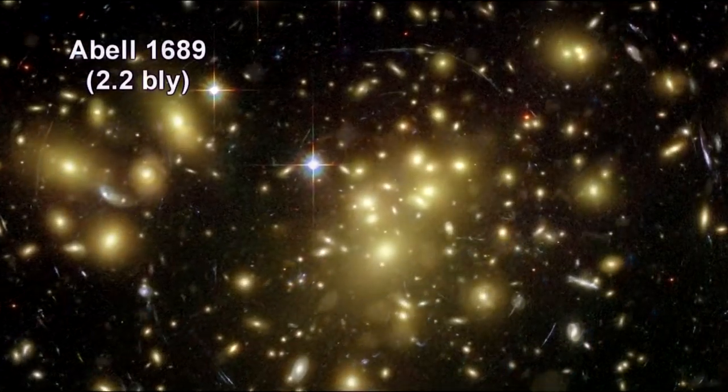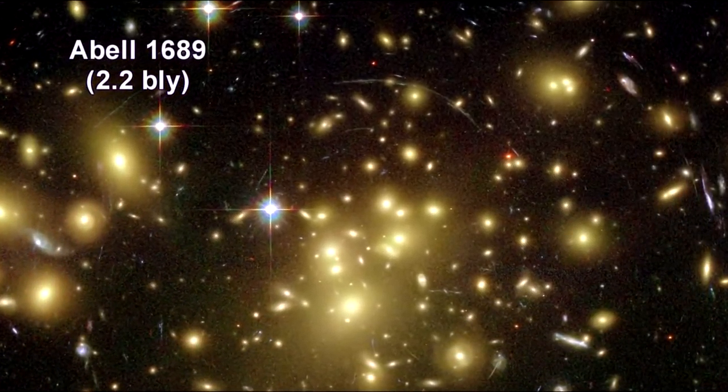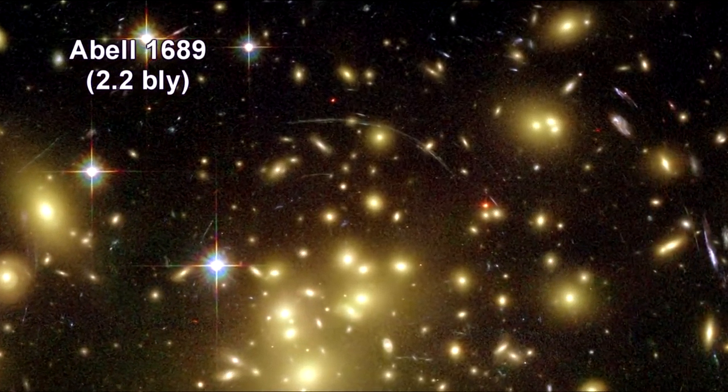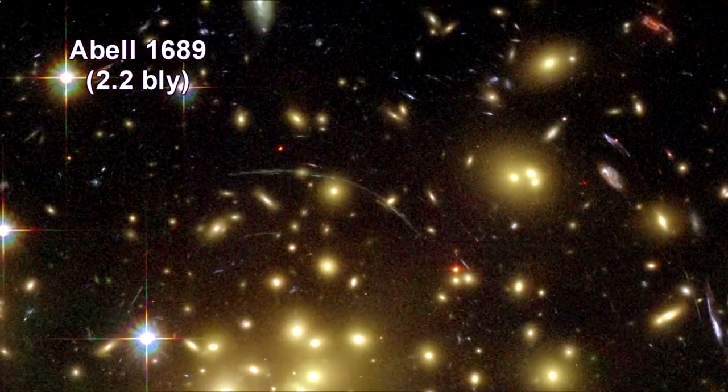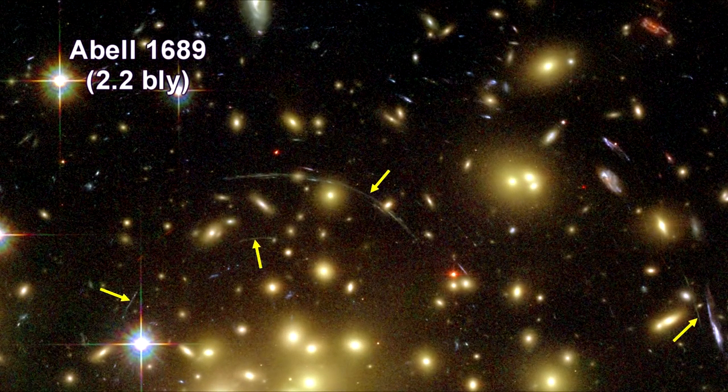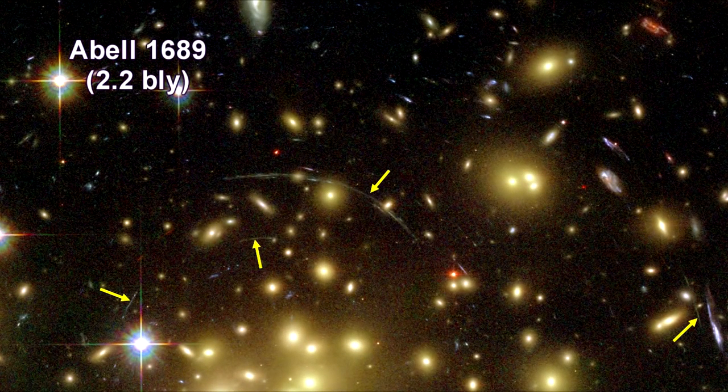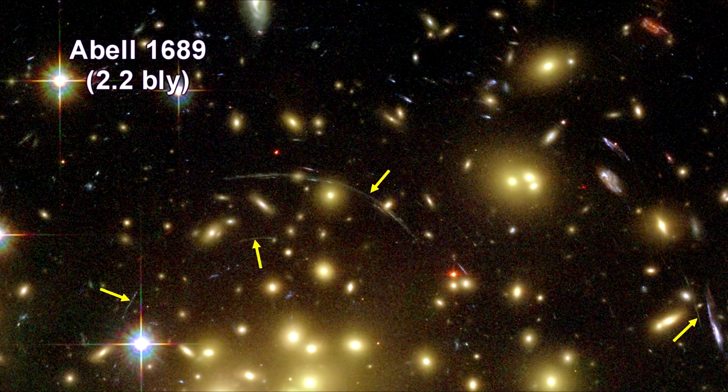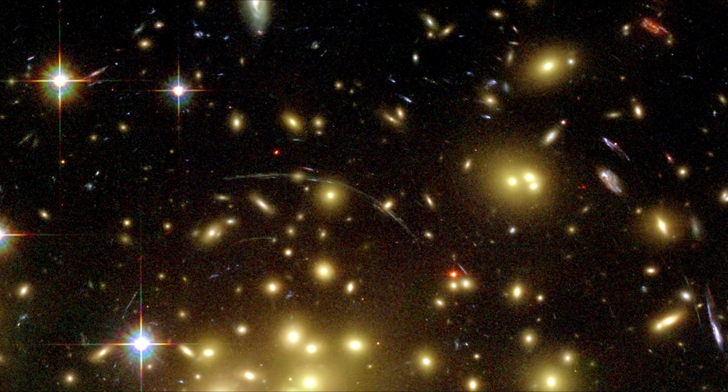This is Abell 1689, 2.2 billion light years away. It's one of the most massive galaxy clusters known. The gravity of its trillion stars plus dark matter acts like a 2 million light year wide lens in space.